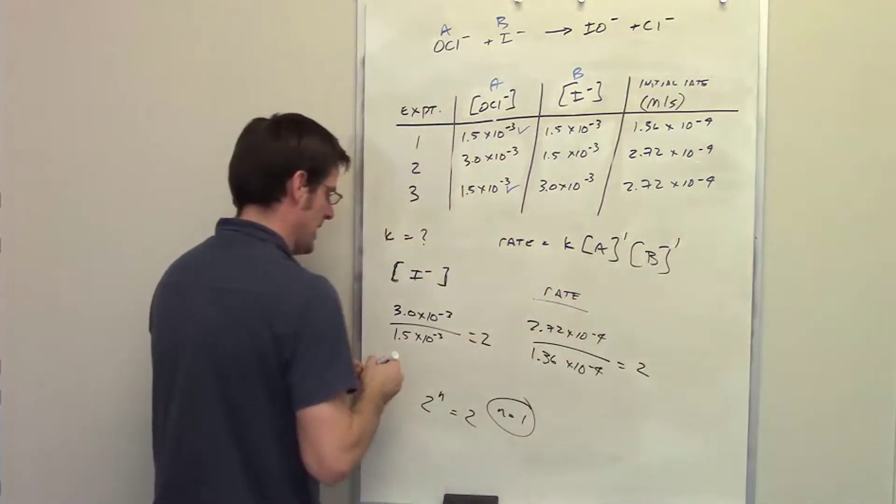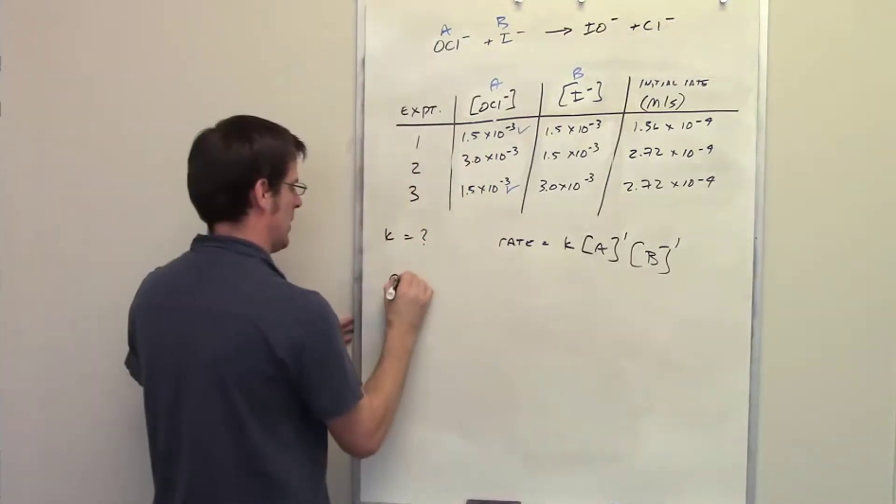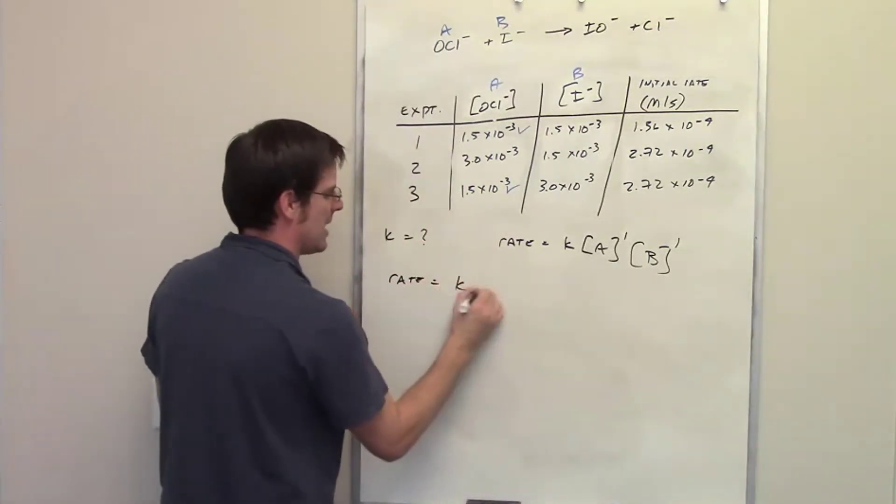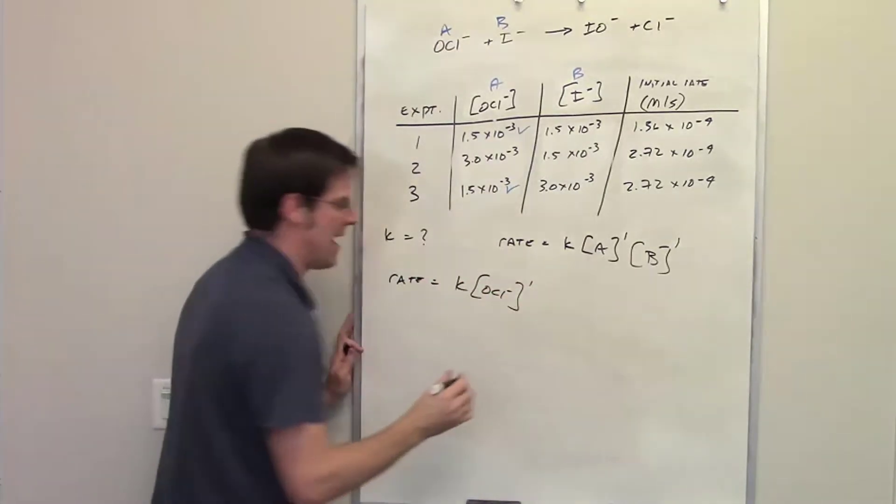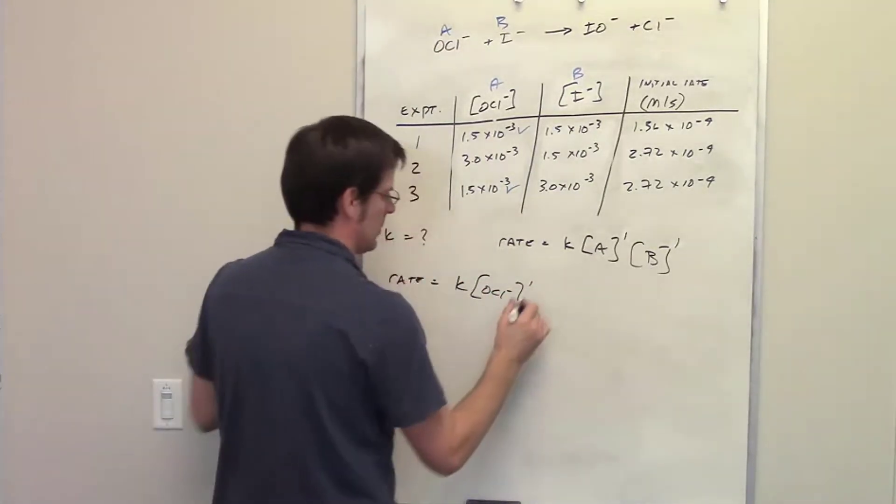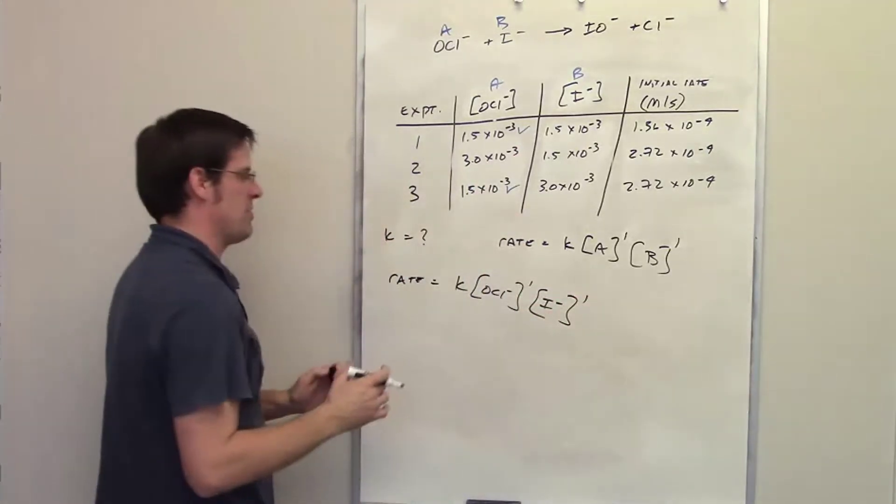Let's go ahead and erase this then and rewrite our rate law with all of this thrown down. I've got rate being equal to K multiplied by the concentration of the hypochlorite raised to the 1 power. That's probably not a word, but I like it. Multiply by the concentration of iodide raised to the 1 power.